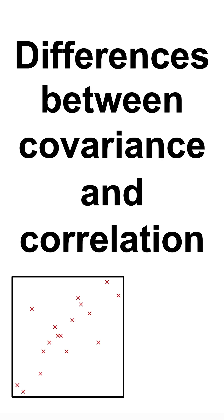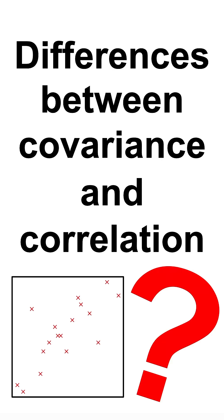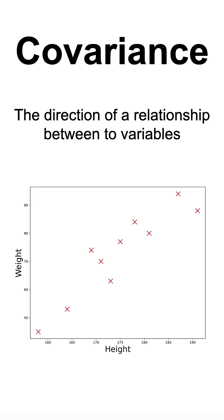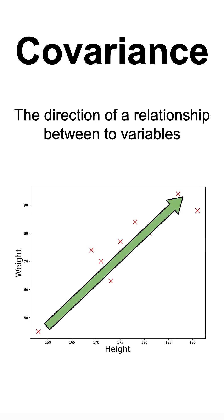What's the difference between covariance and correlation? Well, on one hand, the covariance tells us the direction of a relationship between two variables, either positive or negative. For instance, if we measure the covariance between the height and the weight of people, we would observe a positive covariance.